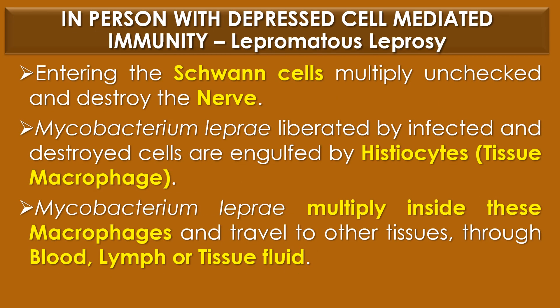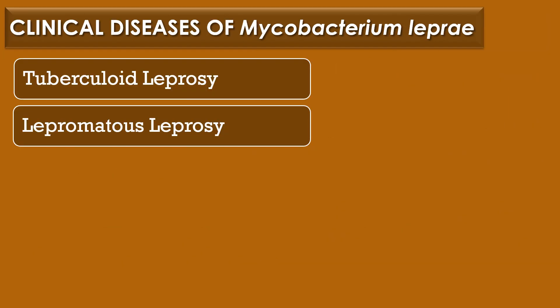Good cell-mediated immunity successfully limits the disease to the nerve Schwann cells, resulting in tuberculoid leprosy which is considered a very mild leprosy. In a person with depressed cell-mediated immunity, Mycobacterium leprae causes multibacillary leprosy or lepromatous leprosy. The bacteria entering the Schwann cells multiply unchecked and destroy the nerves. Mycobacterium leprae liberated by infected cells is engulfed by histocytes or tissue macrophages and multiplies inside them, traveling to other tissues through blood, lymph or tissue fluids.